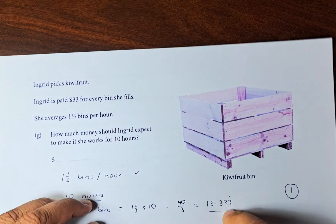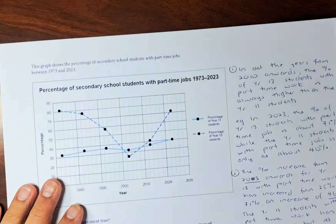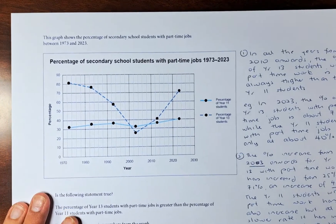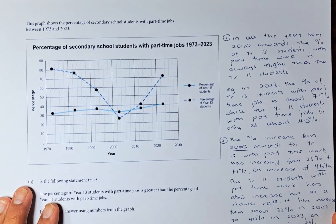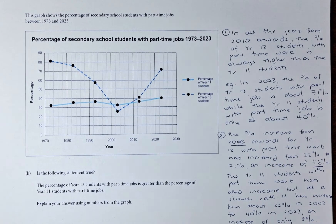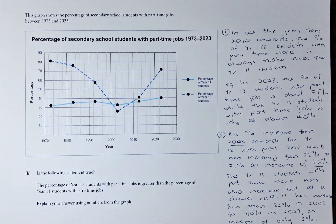Outcome number 2 is a bit more in detail — you need to talk more about statistics. As usual in statistics you need to provide evidence of how you analyze the data. We shall read the question: the graph shows the percentage of secondary school students with part-time jobs between 1973 and 2023.